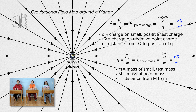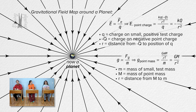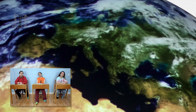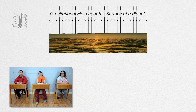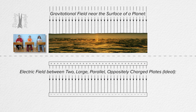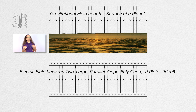That equation is similar to the equation for the electric field around a point charge, which is why the gravitational field around a planet and the electric field around a negative point charge look the same. How come we can treat a planet as a point mass? When we get far enough away from a planet, we can treat it as a point mass. But if you are actually standing on the surface of a planet like we are on Earth, we can consider the gravitational field to be constant and pointed down toward the Earth, and that looks just like the electric field that exists between two large parallel oppositely charged plates. Please remember that is for an ideal case where the two parallel plates are very large relative to the space between them.